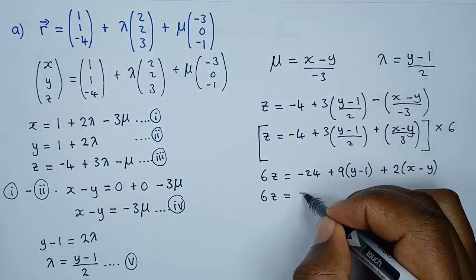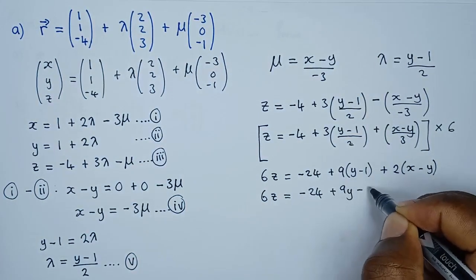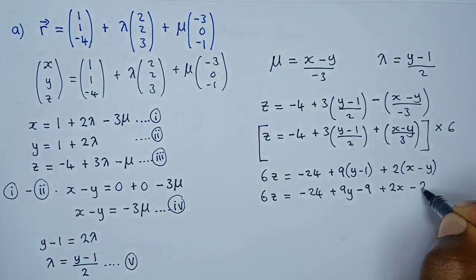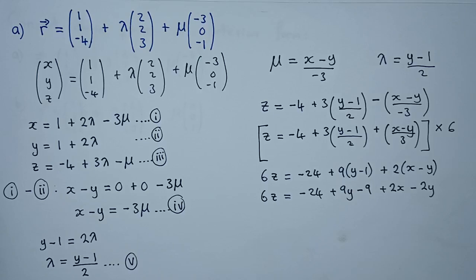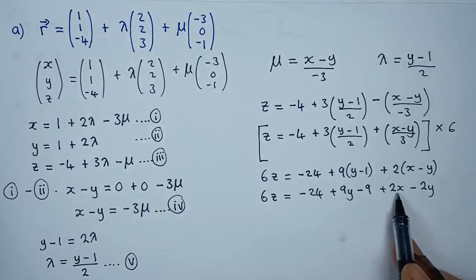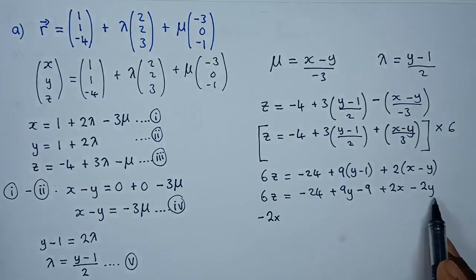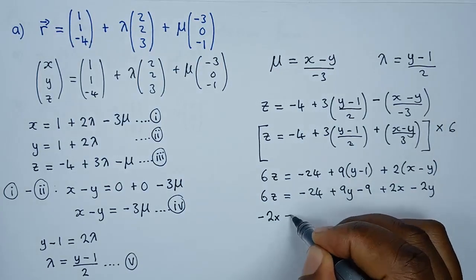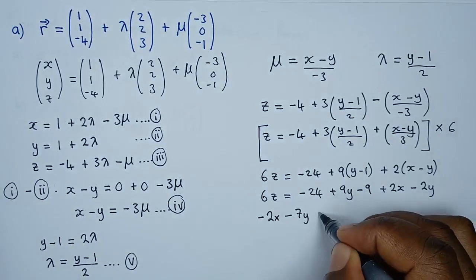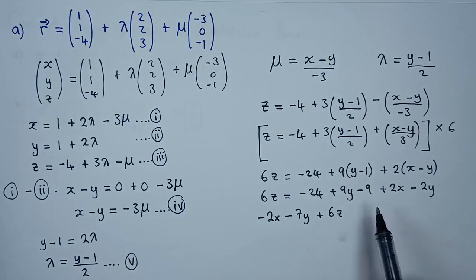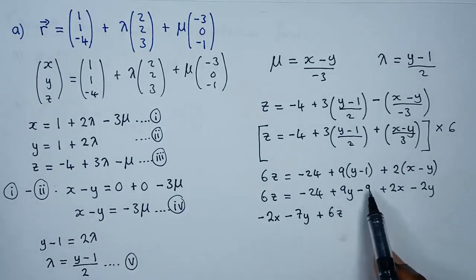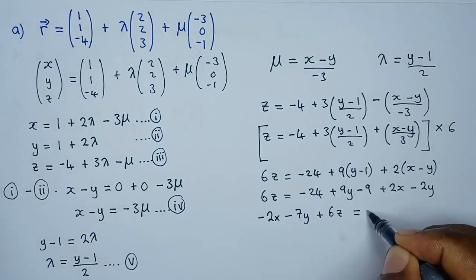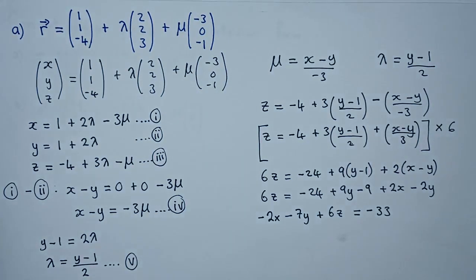Expanding: 6Z = -24 + 9Y - 9 + 2X - 2Y. Collecting the Y terms: 9Y - 2Y = 7Y. Moving everything to one side gives: -2X - 7Y + 6Z = -33. This is the Cartesian equation of the first plane. Now let's look at the second question — the procedure is the same.